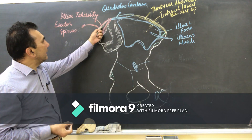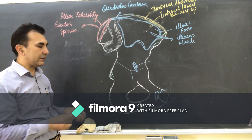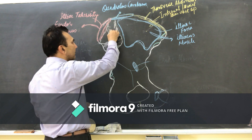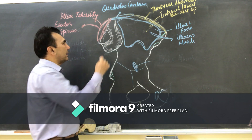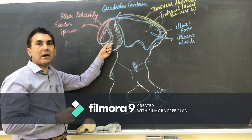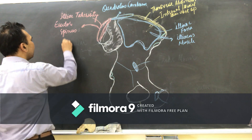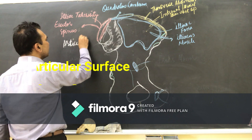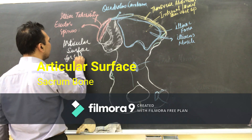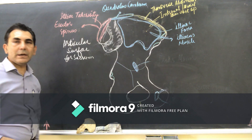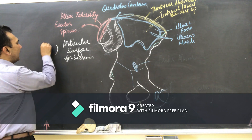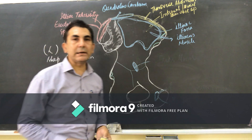Just below the iliac tuberosity on the posterior surface, one third of the area forms a rough surface in the shape of an L. This L-shaped rough area is the articular surface for the sacrum bone, forming the iliosacral joint.